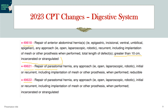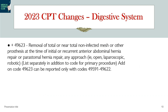Codes 49621 and related codes are for repair of parastomal hernias — any approach — covering both reducible and incarcerated or strangulated types. New add-on code 49623 covers removal of total or near-total non-infected mesh or other prosthesis at the time of initial or recurrent anterior abdominal hernia repair or parastomal hernia repair. This add-on code applies to both abdominal hernia repair and parastomal hernia repair, so be aware of this new add-on code.